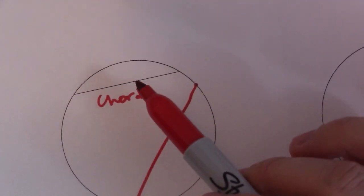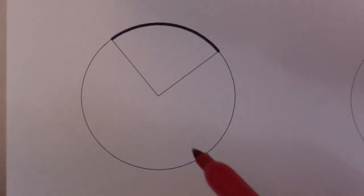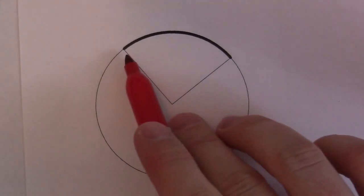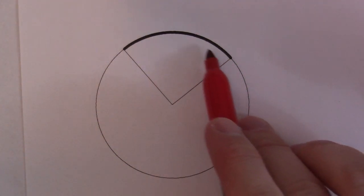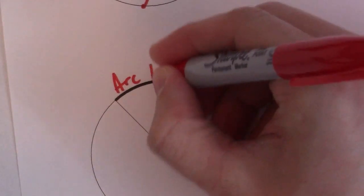So I've got another definition here that's really important. If you look at this black area right here, that is actually called - I'm going to write it here - the arc length.